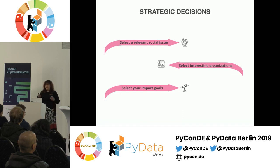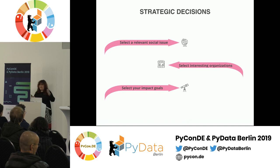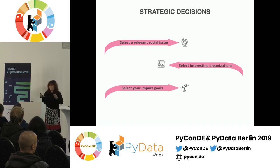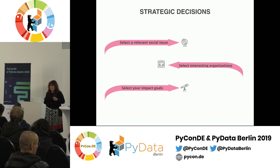So first, the strategic decisions: figuring out what kind of impact you want. The first thing to figure out is what kind of social issue is relevant for you. If you remember those 17 goals from the UN Global Goals, there's a lot of different things you could be doing — so it's helpful to focus and figure out what really matters to you. Then, once you know what kind of social issue you're interested in, figure out what kind of organizations you want to work with and which organizations are impactful.